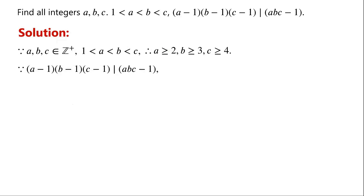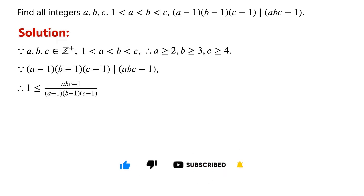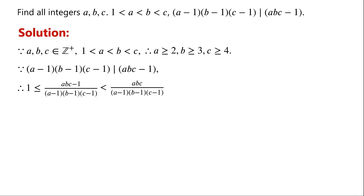Because (a-1)(b-1)(c-1) is a divisor of abc - 1, so (abc - 1) / [(a-1)(b-1)(c-1)] must be greater than or equal to 1. And clearly it must be less than abc / [(a-1)(b-1)(c-1)], which can be written as [a/(a-1)] × [b/(b-1)] × [c/(c-1)].